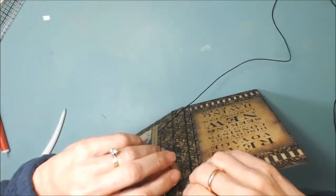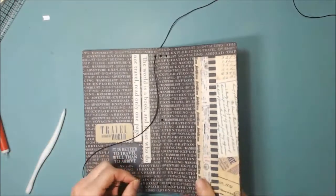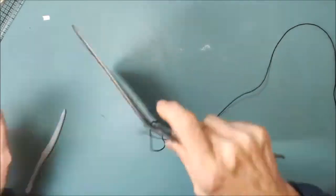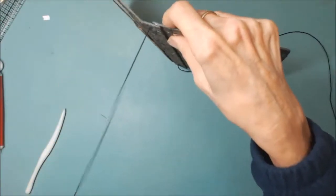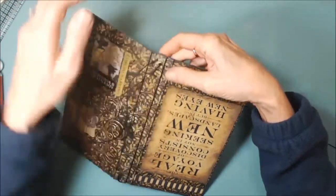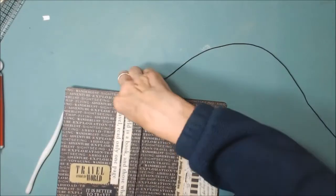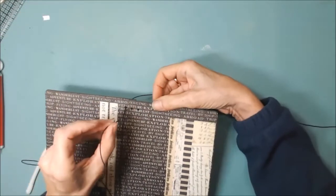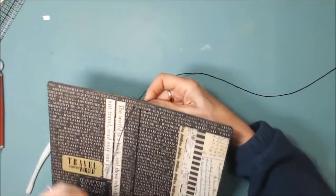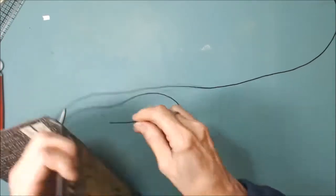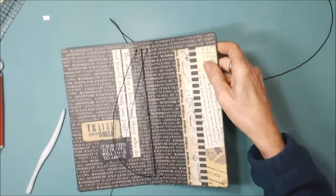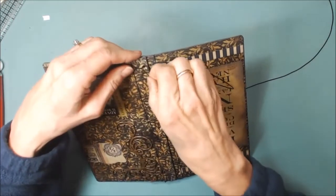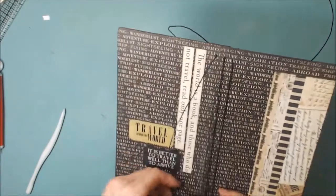So you start from the outside and bring the thread through. Go back through this hole. Then at the bottom, come back through the center hole. Go back through the top middle hole. Come back through the top right hole from the outside. Go through the bottom right hole. Come back through the center bottom hole into the inside of the book. It's really very easy.